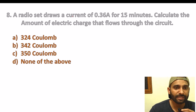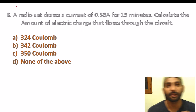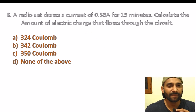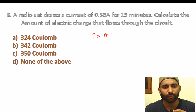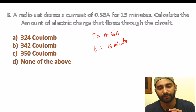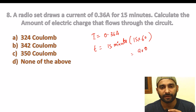Now here is a numerical question: a radio set draws a current of 0.36 ampere for 15 minutes. Calculate the amount of electric charge that flows through the circuit. Students, this is a numerical — I mentioned that numericals in this chapter are quite important. Given: current I = 0.36 ampere, time t = 15 minutes. Always convert time to seconds.